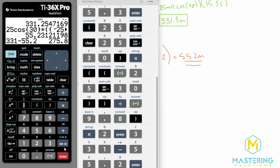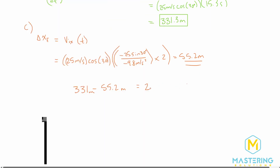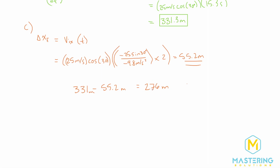To find the final answer for part C, we subtract: 331 meters minus 55.2 meters equals 275.8 meters, so approximately 276 meters. That is how much further it goes on the moon than on the earth. For significant figures, you could round to two significant figures giving 280 meters, but 276 meters is three significant figures — put in whatever number of significant figures your question asks for.